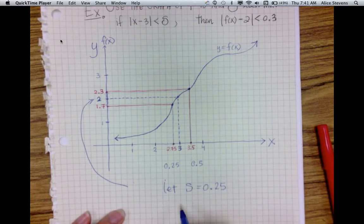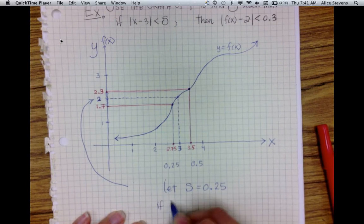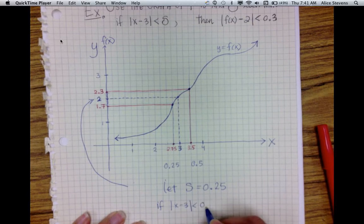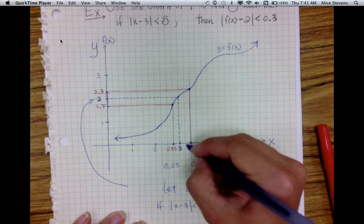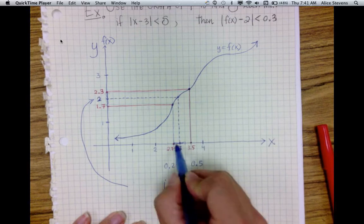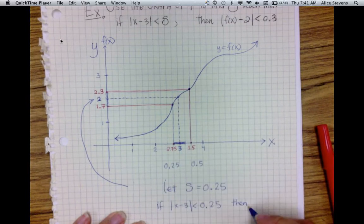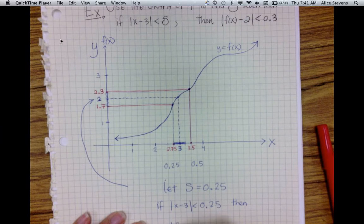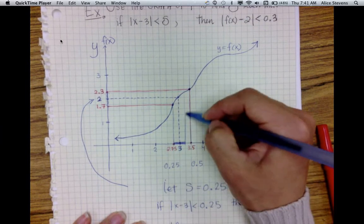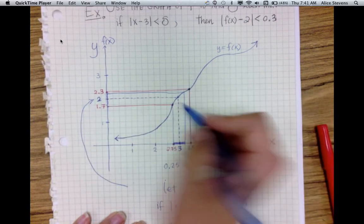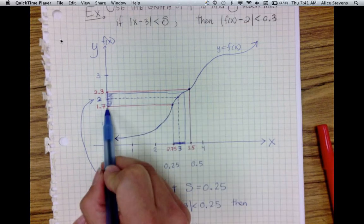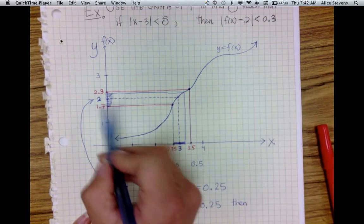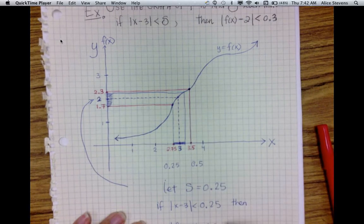So I'm going to let delta equal 0.25, which is the smaller value. Now, if the distance between x and 3 is less than 0.25, those are the values that satisfy the inequality. Then it's definitely true that the distance between f of x and 2 falls within 0.3 units of 2, so the inequality is actually satisfied.